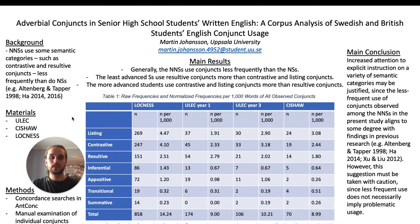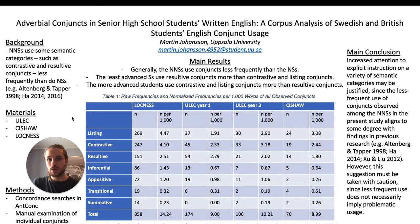I investigated the corpora based on the following research question: How do the ULIC and the CHESHA writers use conjuncts in relation to the Loch Ness writers, with respect to semantic categories, placement, and syntactic realizations?